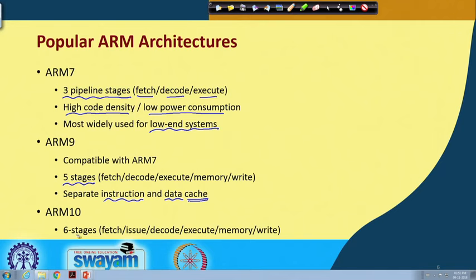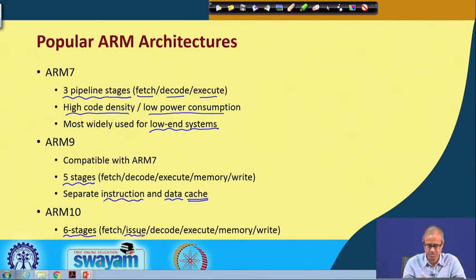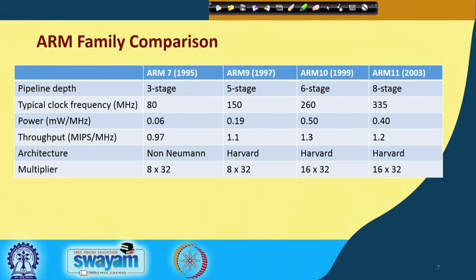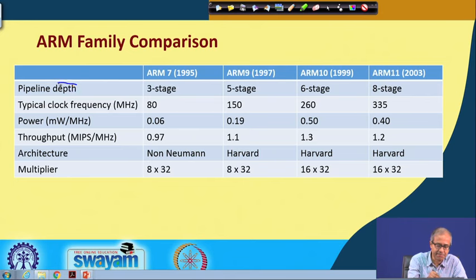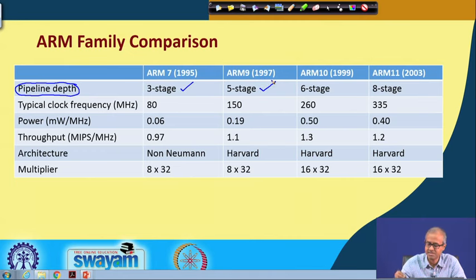ARM 10 further enhanced the pipeline by adding an issue stage. A quick comparison: ARM 7 introduced in 1995 has 3 pipeline stages; ARM 9 in 1997 has 5 stages; ARM 10 in 1999 has 6 stages; ARM 11 in 2003 has 8 stages. Clock frequencies increased from 80 MHz in ARM 7 to 150, 260, and 335 MHz in later versions. Power consumption is measured in milliwatts per megahertz — ARM 7 at 0.06, ARM 9 at 0.19, ARM 10 at 0.50, and ARM 11 at 0.40, with low-power techniques reducing consumption in ARM 11.